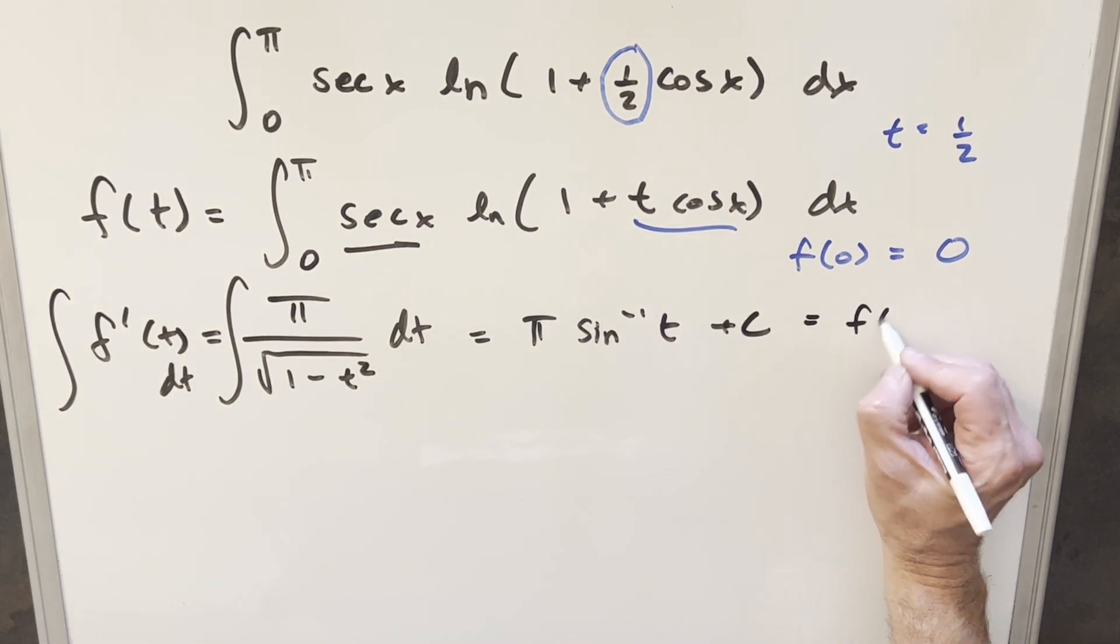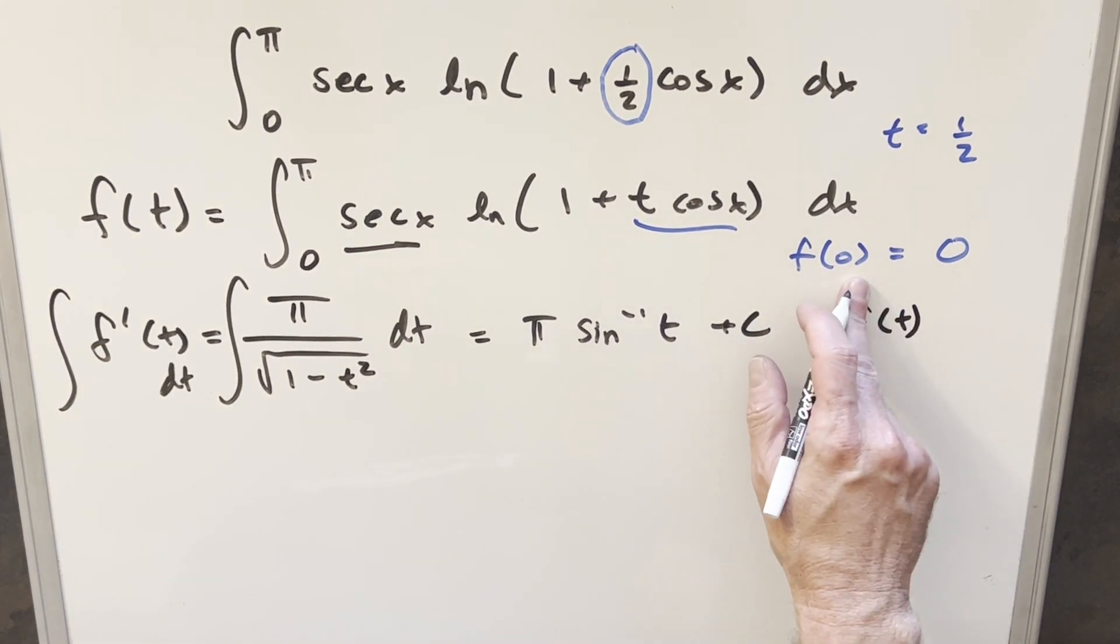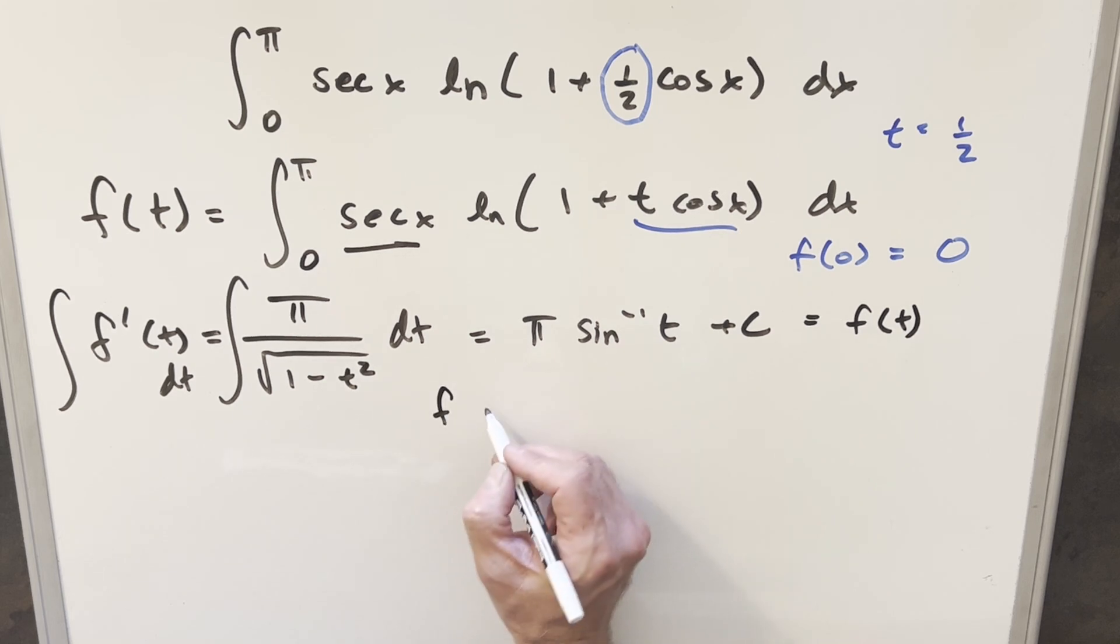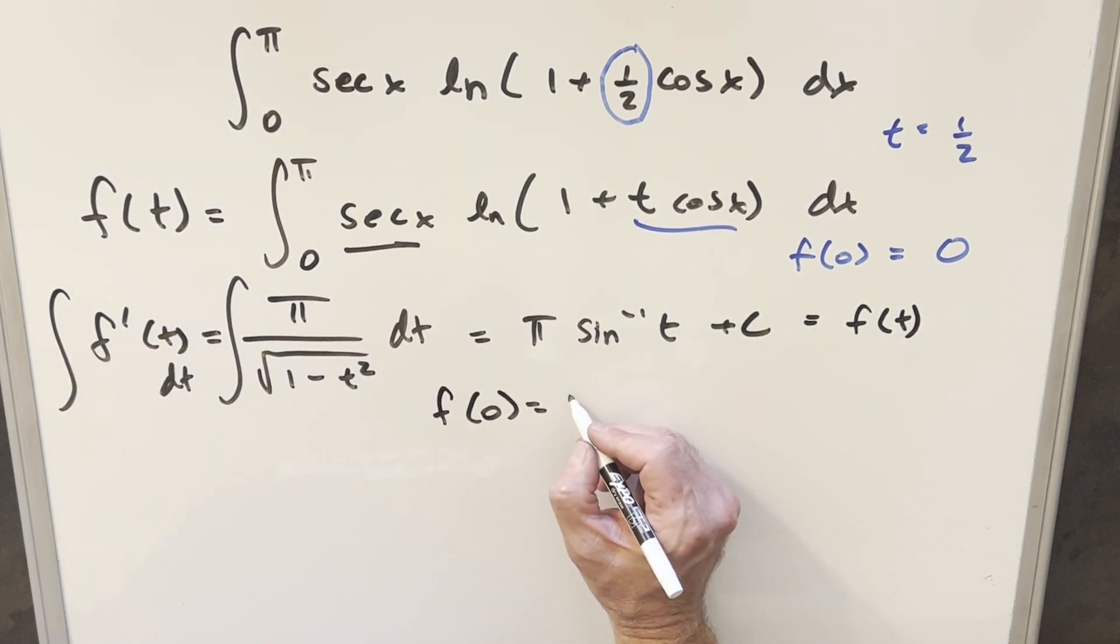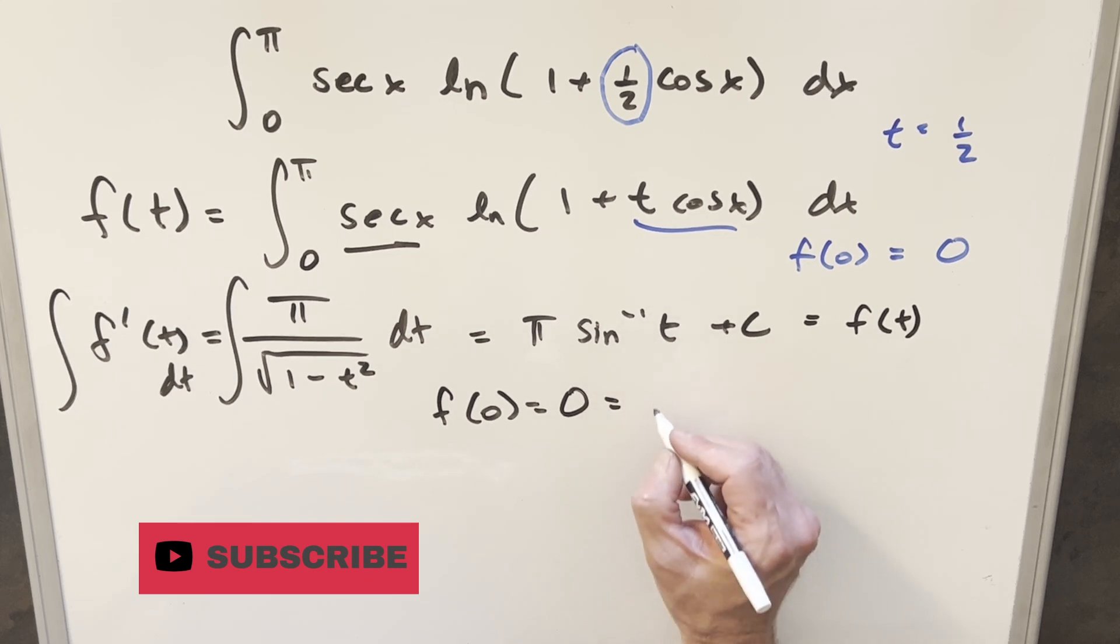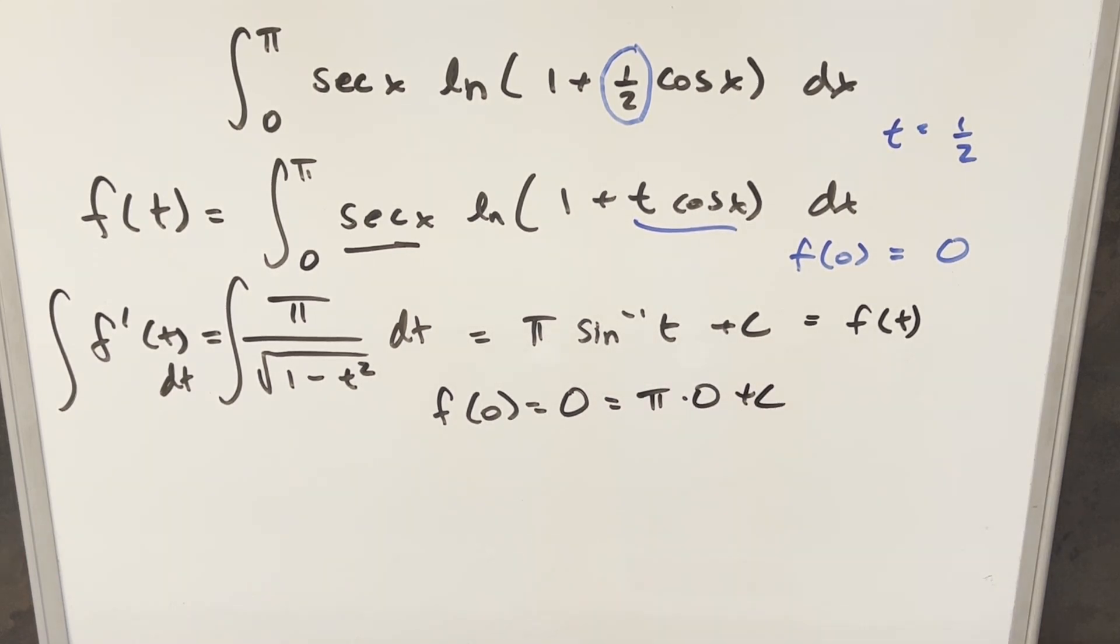And this is our f of t value. But you can now use this f of zero value to kind of evaluate. So f of zero, we know it's going to be zero. We plug in zero here, we're going to have pi arc sine of zero, zero plus c. Well, as it always seems to turn out, the c value is just equal to zero. So this goes away, and we have our f of t is going to be pi arc sine of t.